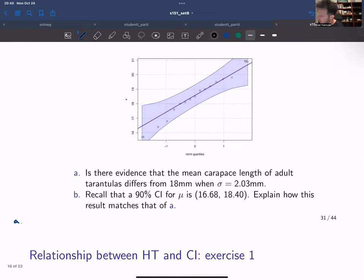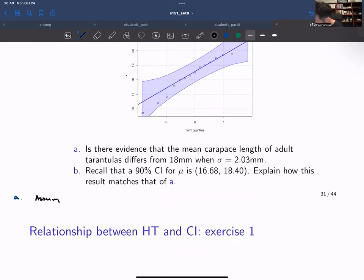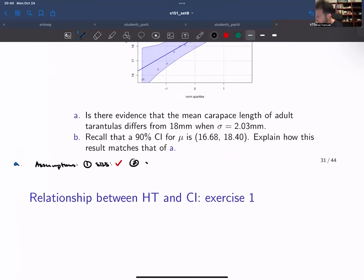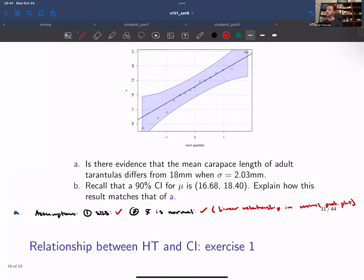So we have our assumptions. The first assumption is the simple random sampling assumption, which is stated in the problem. The second assumption is that x bar is normal. We can say this is true from the linear relationship in the normal probability plot. We can see that the points are linear and they're within the bounds, so this gives evidence of normality.